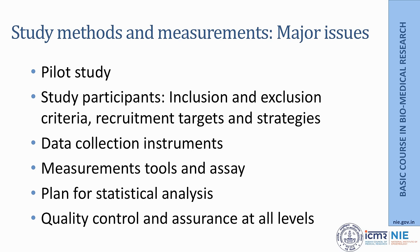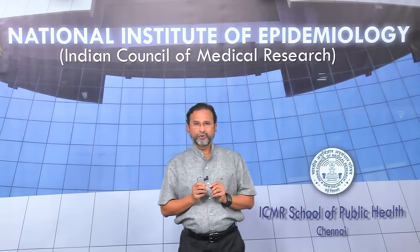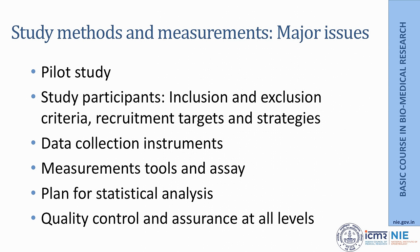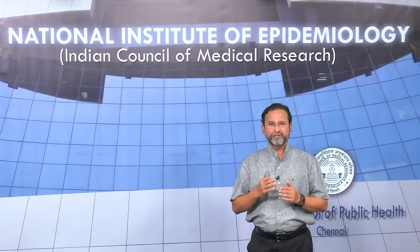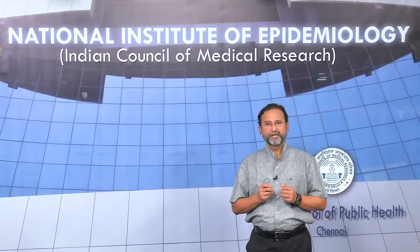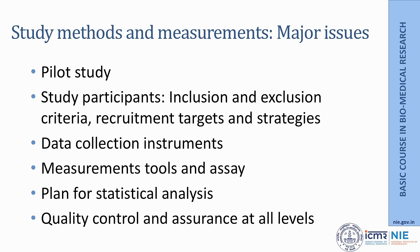Data collection instruments are really critical — if there are any mistakes in the way they have been designed, we cannot make changes at a later stage, so a lot of work has to be done beforehand in deciding the right kind of data collection tools. Measurements — whether through laboratory methods or assays — have to be properly standardized with proper internal and external controls for quality control. The lab should probably also be part of an external quality assurance program, ensuring quality control and assurance at all levels. It is also important that the plan for statistical analysis be decided right at the beginning, as that gives a clear idea about how information will be collected and what the results will eventually look like.